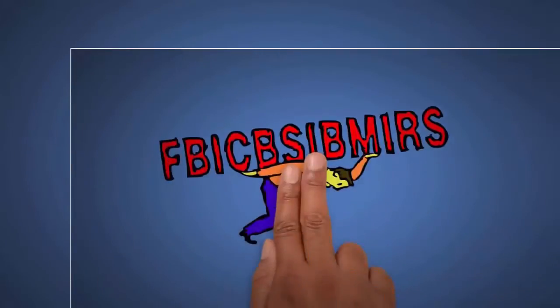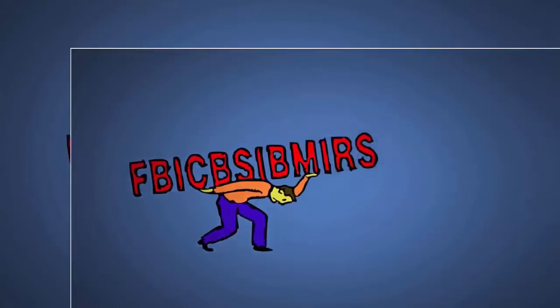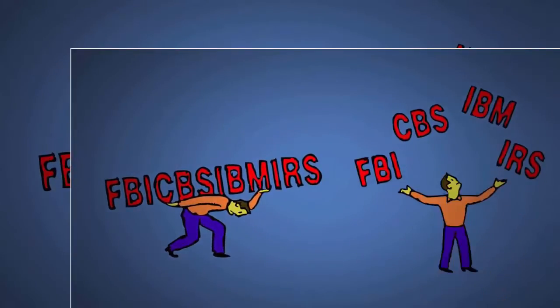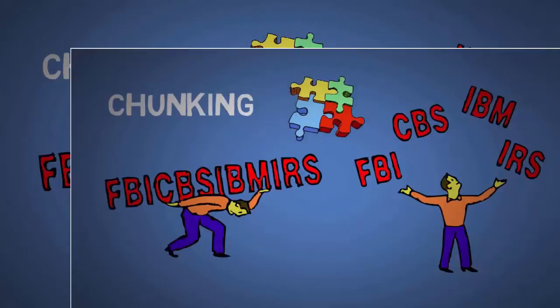Next, what if I asked you to memorize these letters? Well it would be much easier if you split them into FBI, CBS, IBM and IRS. This is called chunking. Instead of trying to recall 12 elements you have now reduced it to 4. Using the concept of chunking we're going to learn the peg system.